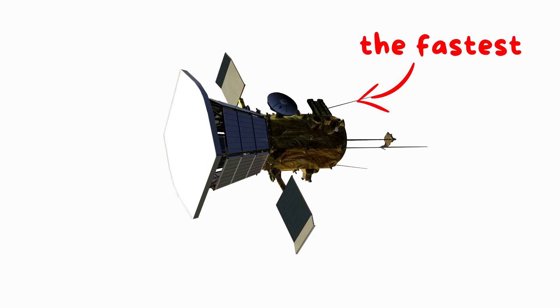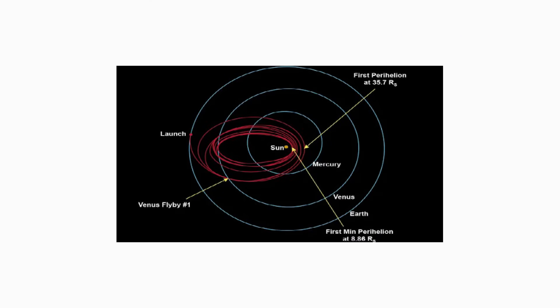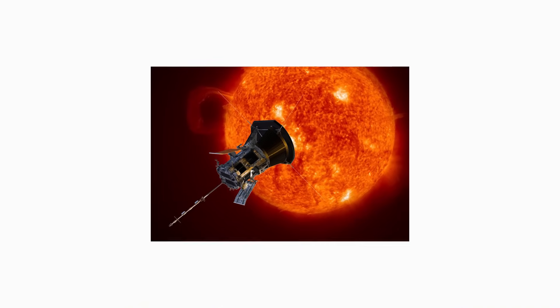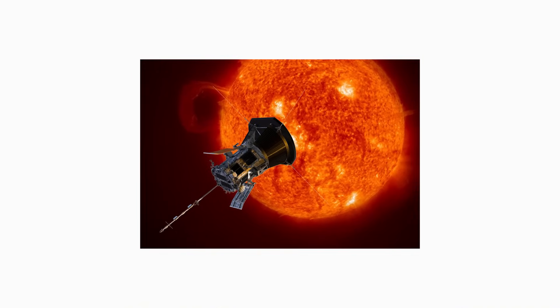The Parker Solar Probe, one of the fastest spacecraft ever built, needed multiple gravity assists from Venus just to get close to the sun. And even then, it's not actually falling in. It's just skimming the surface.